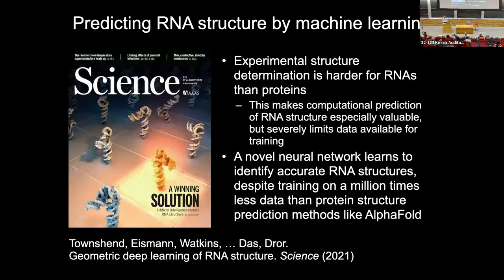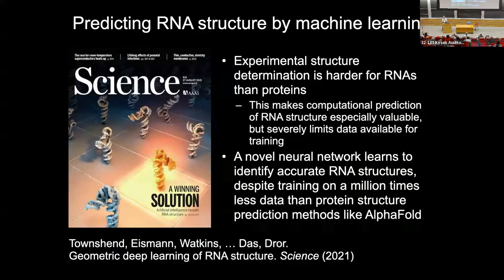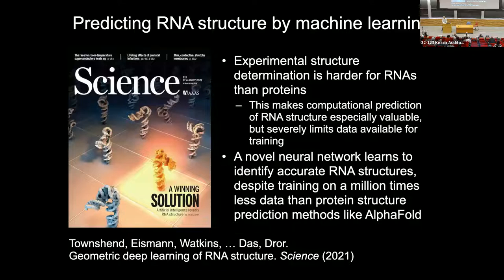Actually, in this paper, which to my surprise appeared on the cover of Science in the same month that DeepMind's AlphaFold appeared on the cover of Nature, we trained a method using structures of 18 RNAs and no other information. End-to-end learning, starting with just the positions and element types of the atoms.